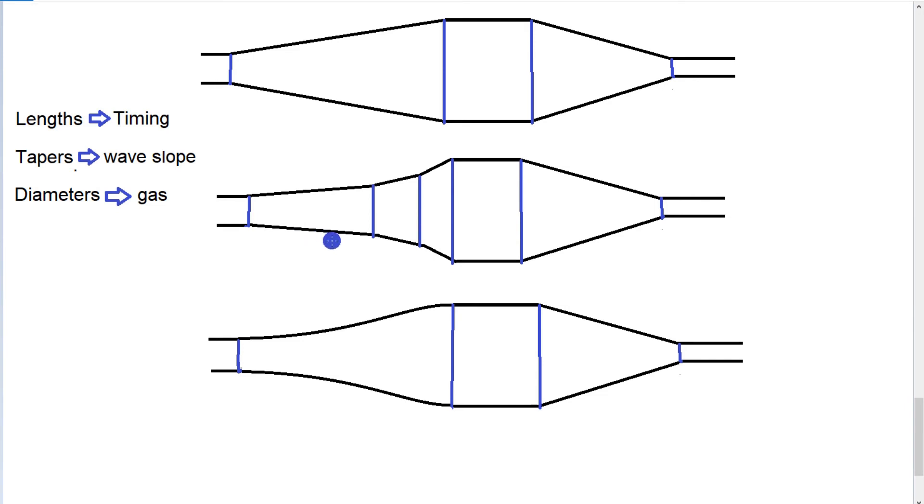So a pipe with a more higher angle earlier on in the diffuser and not so much late in the diffuser is better for top end power.